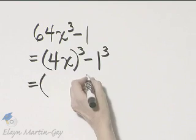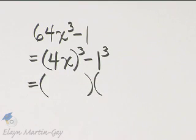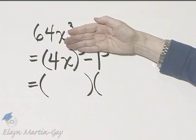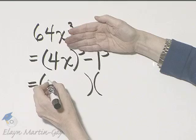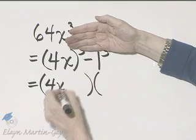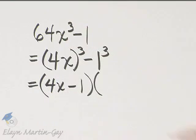Then as I factor, it will be a binomial times a trinomial. And seeing the binomial is simple. If you just cover your cubes up in this intermediate step, notice you have 4x minus 1. That is the binomial.